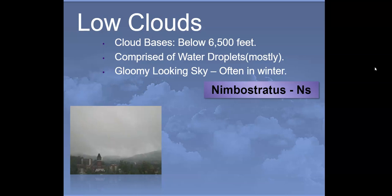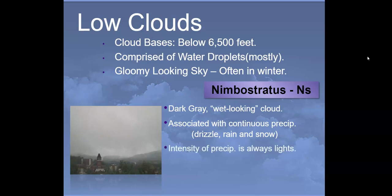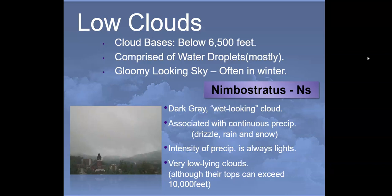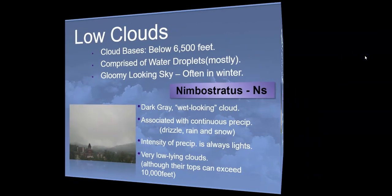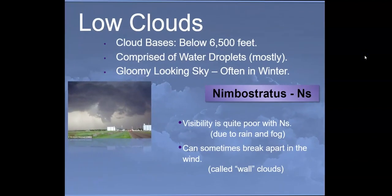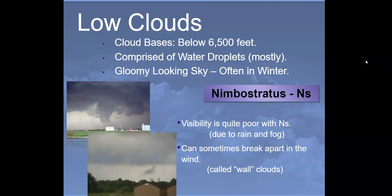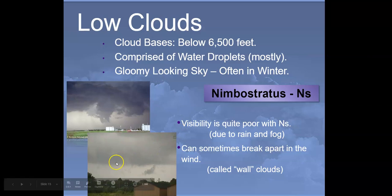Next are nimbostratus clouds — dark gray, wet-looking clouds. When you open your curtains and see a drizzly day, that's probably a nimbostratus. They are associated with continuous but generally light precipitation such as drizzle, rain, or snow. These are very low-lying clouds, even though tops can exceed 10,000 feet. They give poor visibility due to rain and fog, and can sometimes break apart in the wind, forming what are called wall clouds — the scary-looking ones.